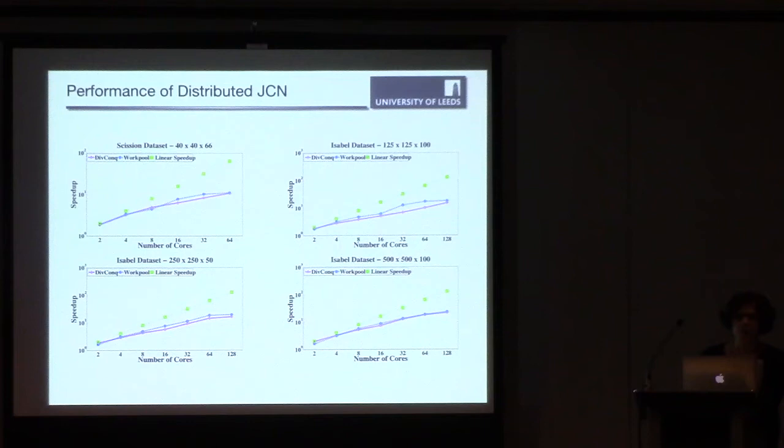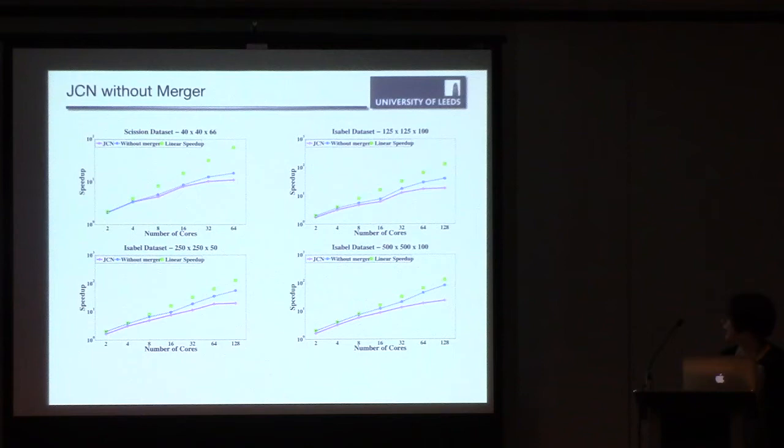But divide and conquer also has an advantage of a low communication overhead. Because in divide and conquer, when we merge two sub-problems, one of these sub-problems has already been computed locally. We only send one JCN, while for our new work pool skeleton doesn't consider the locality of sub-problems when assigning to merge them. We need another experiment to compare the full computation of JCN with the case that we don't perform the merge phase. So only doing the first stage of computing JCN locally.